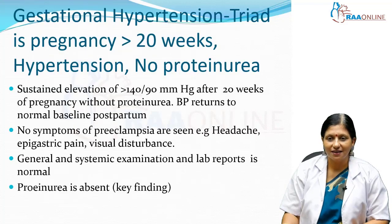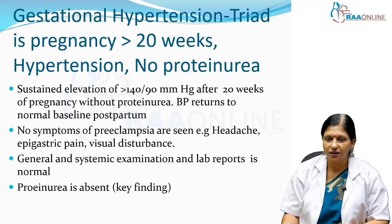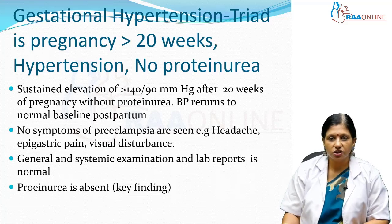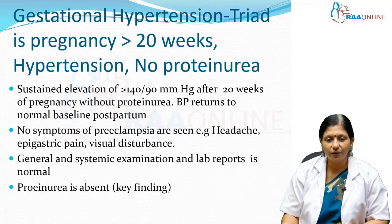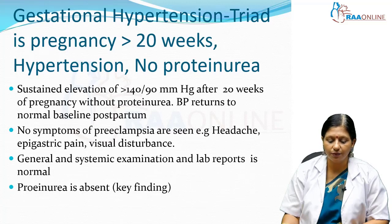Coming to the first category — gestational hypertension. What is the obstetrical triad? Pregnancy is more than 20 weeks, the patient has hypertension, but there is no proteinuria. Gestational hypertension is a sustained elevation of blood pressure more than 140/90 after 20 weeks of pregnancy, without proteinuria. Postpartum, the blood pressure returns to normal. There are no symptoms of pre-eclampsia like headache, epigastric pain, or visual disturbances, and general examination, systemic examination, and lab reports are normal.